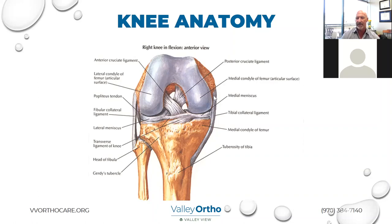When you tear a ligament, usually that will lead to instability. This is the MCL on the inside of this right knee model. Here's the lateral collateral ligament — it's more cord-like. Then the two in the middle are the ones that really get most of the press — the cruciates. They're called the cruciates because they cross. The anterior cruciate lives in front of the posterior cruciate. The anterior cruciate is a little smaller and weaker — hence, it's injured more commonly. This part of the knee right here is called the notch — that's where the cruciate ligaments live. We have four bones, four ligaments, and two types of cartilage in the knee.